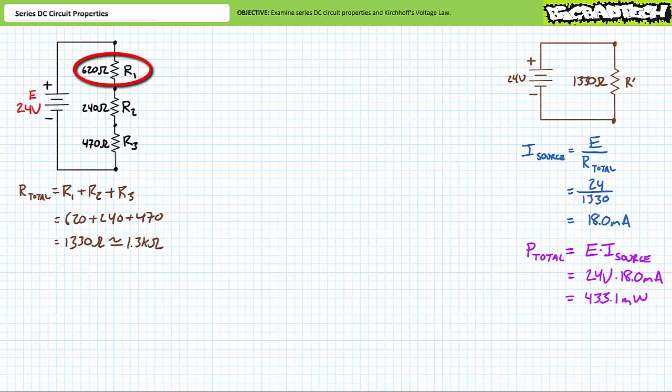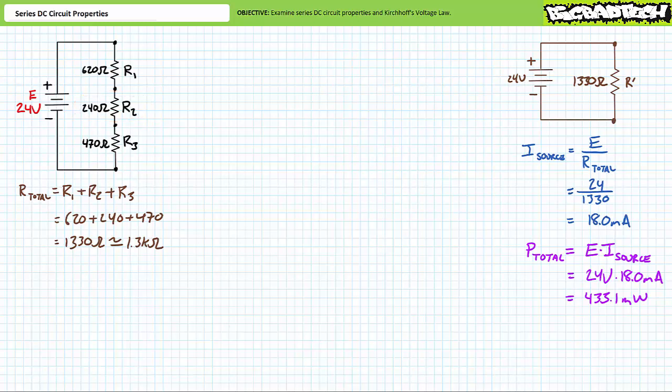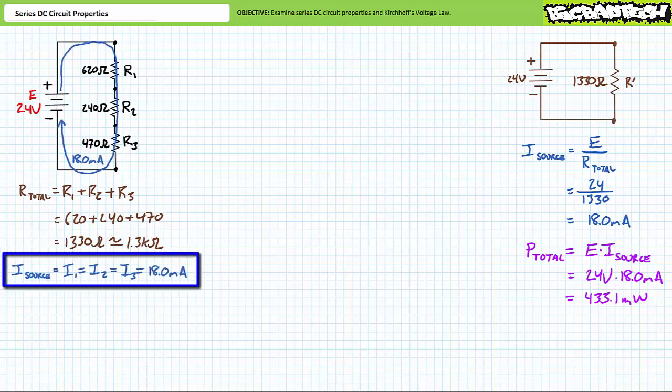Current through elements in series is the same because there is one and only one path for current. In this scenario, source current equals the current through R1, which equals the current through R2, which equals the current through R3, and they all equal roughly 18 milliamps. I source equals I1 equals I2 equals I3, all equal to 18 milliamps. Given the direction of conventional current travel, we would expect voltage drops across the individual elements positive to negative, top to bottom.